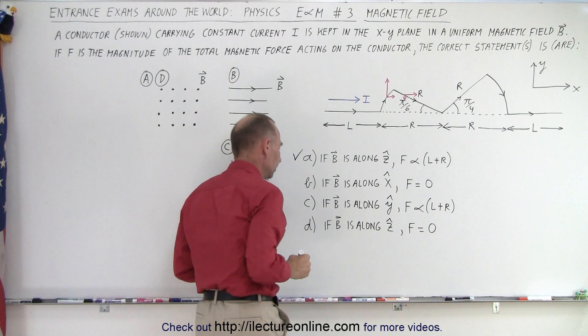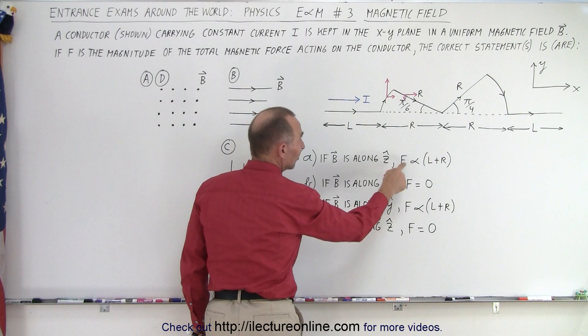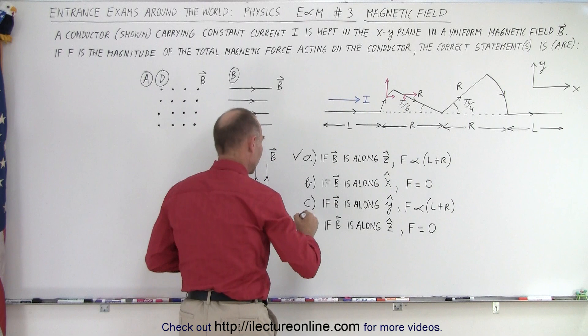So statement A, with B along the Z-axis, is confirmed true. Since statement D also involves B along the Z-axis but gives a different result, D cannot be true if A is true. So we can right away say that D is not part of the answer.